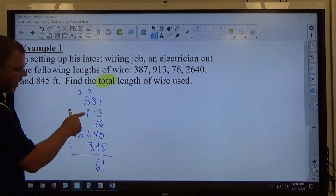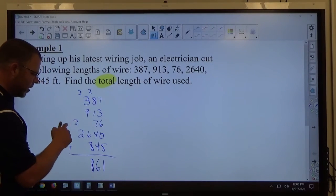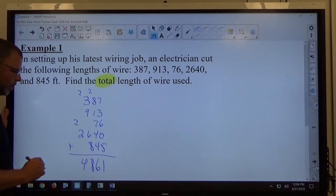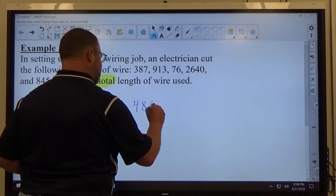2 and 3 is 5, and 9 is 14, and 6 is 20, and 8 is 28, carry the 2. 2 plus 2 is 4. So, we end up at 4,861 feet.